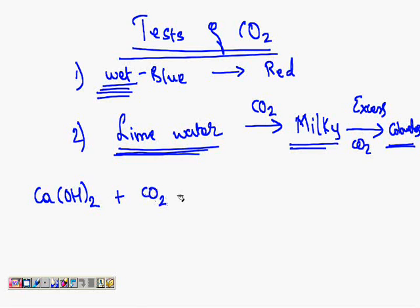When you pass carbon dioxide through it, it forms CaCO₃ plus H₂O. CaCO₃ is a white colored precipitate; it is insoluble in water.